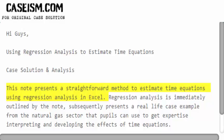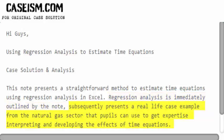This node presents a straightforward method to estimate time equations using regression analysis in Excel. Regression analysis is immediately outlined by the node, which subsequently presents a real-life case example from the natural gas sector that pupils can use to get expertise interpreting and developing the effects of time equations.